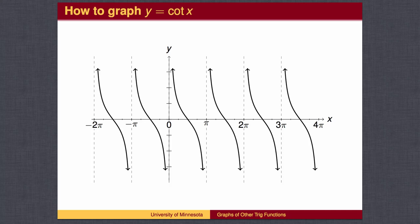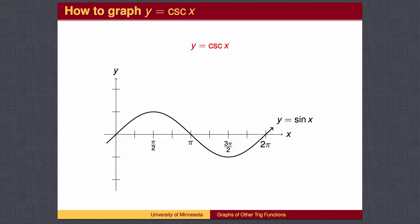Cosecant is the reciprocal of sine, so we will use the sine wave to help us graph the cosecant function. The cosecant will be undefined where the sine is 0, which is at 0, pi, and 2 pi.